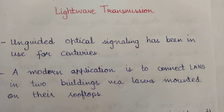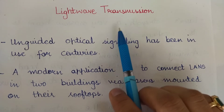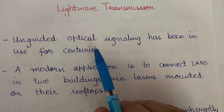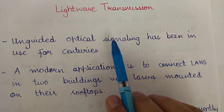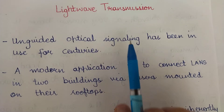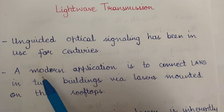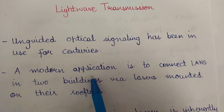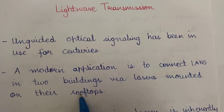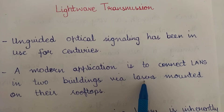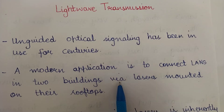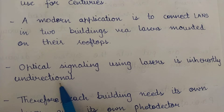Today we are going to study light wave transmission in wireless transmission or unguided media. Light wave transmission basically uses optical signaling, so you can call it light wave transmission or optical signaling. Unguided optical signaling has been used for a very long time. A modern application is to connect two LANs in two buildings via lasers mounted on their rooftops — this is one modern application of light wave transmission or optical signaling.